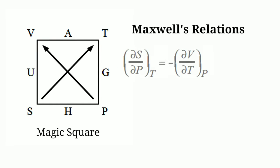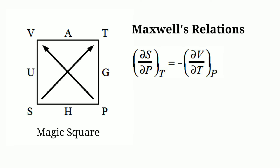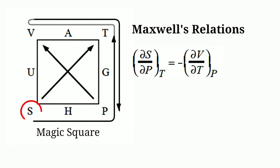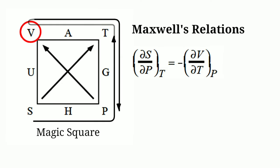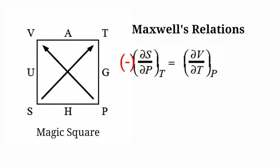Now let us find out Maxwell's third relationship. To find out this relationship you have to move on in the magic square like this: partial derivative of S with respect to P at constant T equals partial derivative of V with respect to T at constant P. Since S is at the arrow tail it should be minus, but if we multiply this equation by minus 1 then we get this relationship.